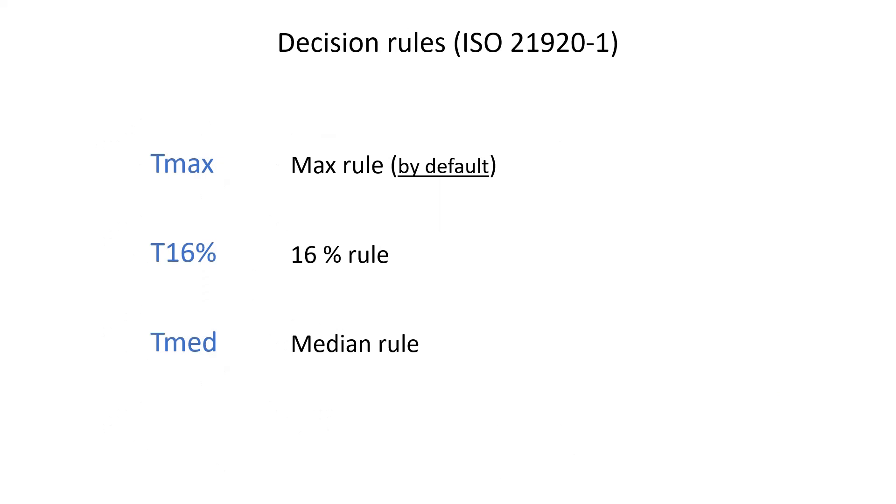ISO 21920 introduces three symbols for decision rules. They can be written in the specification string below the root symbol. Tmax corresponds to the max rule. No measured value shall be outside the limit. It is now the default rule. T16% corresponds to the former 16% rule and it has to be explicitly written when it is required. The new symbol Tmed corresponds to a limit compared to the median of the measured values.